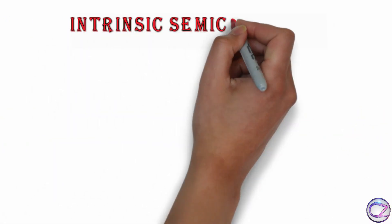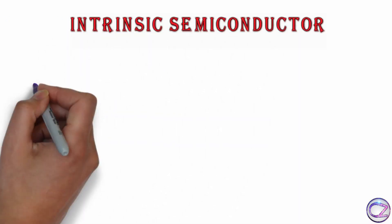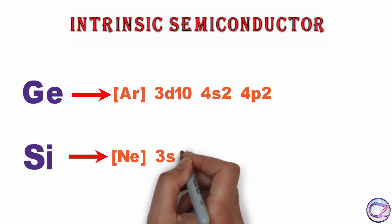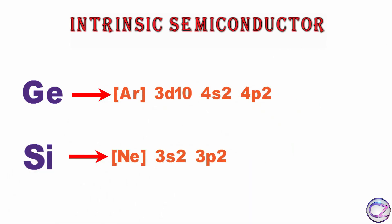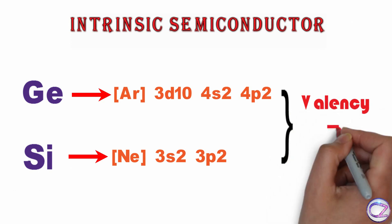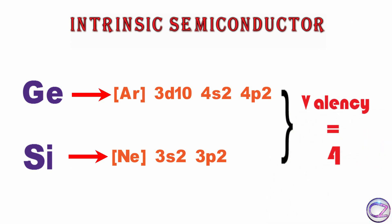Intrinsic Semiconductor: It's actually pure semiconductor. Focus on their electron configuration first. Their valency is the same, which is 4. And we know every atom wants to be neutral by filling 8 electrons in the outer orbit. So germanium or silicon need 4 extra electrons to be neutral.